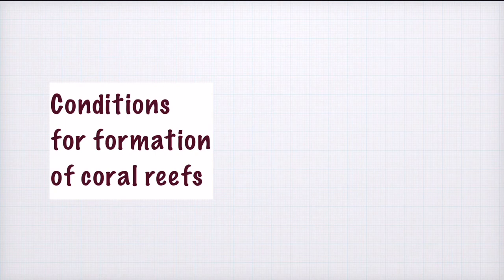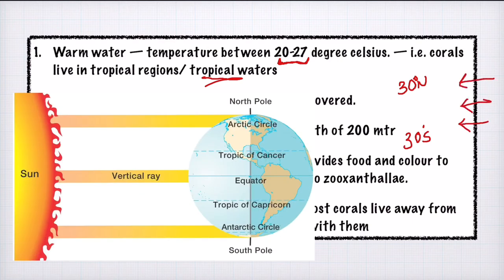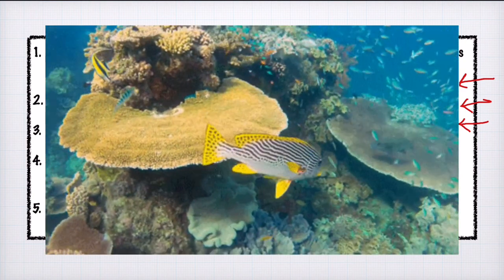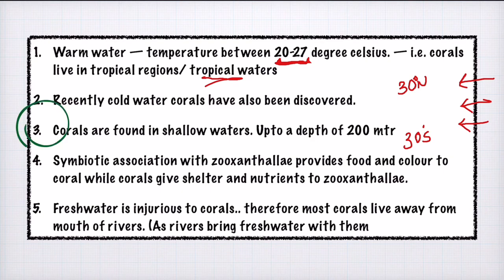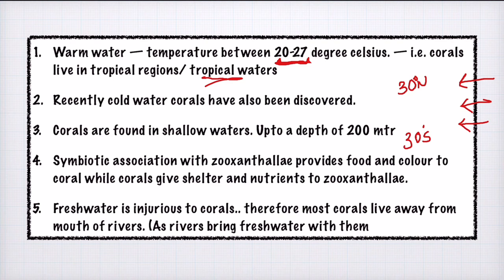Moving on to the next topic — conditions for formation of coral reef. The first condition is that they require warm water — gungunye pani. The water temperature should be between 20 to 27 degrees Celsius. From 30 degrees north to 30 degrees south latitude, the water is tropical, direct sunrays fall there, temperature is higher compared to other latitudes, and that is where you will find corals. An important and interesting point: recently cold-water corals are also being discovered at higher latitudes. However, the key point remains that coral will always be found in shallow water — not in very deep water — up to a depth of 200 meters.